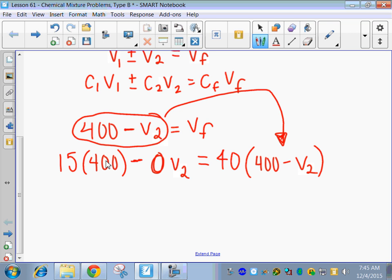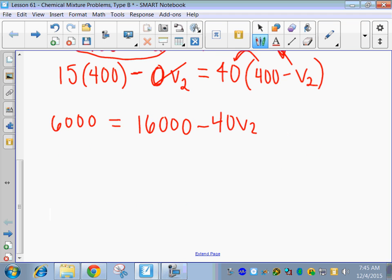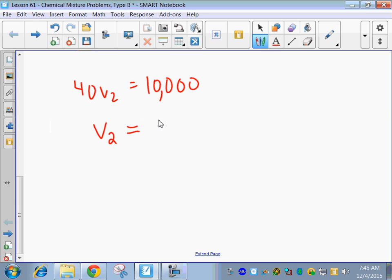Now we can just solve the second equation. 15 times 4 is 60 plus two zeros. Zero times V2, you guys, what happens to that? Yeah, it just cancels. And so we have 40 times V2 equals 40 times 400, that's 16 with three zeros, and 40 times V2, so minus 40 V2. I'm going to add the 40 V2 over to this side, so it's positive, and I'm going to subtract the 6,000 from this side. That's 10,000. And then divide both sides by 40, and we get 250, and whatever we were talking about, gallons in this problem. 250 gallons of what? What did we subtract? Water, right? We evaporated water.